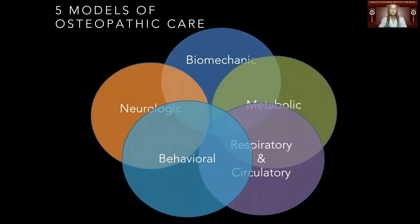Let's discuss the five models of osteopathic care. Consider a patient with the chief complaint of trouble breathing. Going through the five models, we can develop a differential diagnosis. For biomechanical, does the patient have a rib fracture? Neurologic, is there an over-sympathetic drive altering the patient's breathing? Metabolic, does the patient have any thyroid issues or an infectious cause like pneumonia? Respiratory circulatory, does the patient have chronic heart failure or a pulmonary embolism? Behavioral or biopsychosocial, does the patient have anxiety?